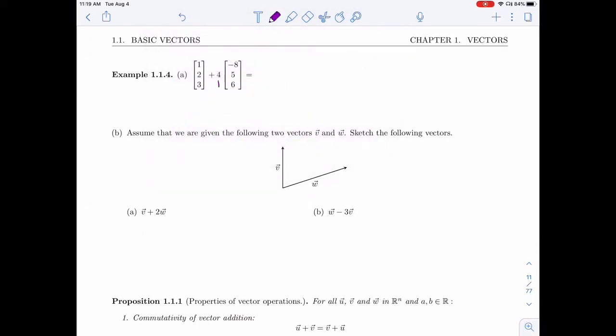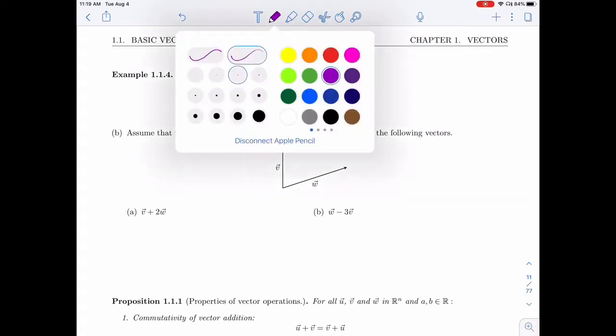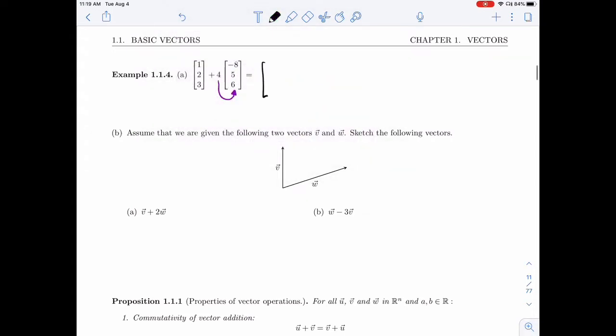What I'm going to do first is this multiplication operation, since multiplication has priority over addition, just like it would in real numbers. So I'm going to multiply each entry by 4. That was a 5, and 4 times 6. So I get (1, 2, 3) plus (-32, 20, 24).